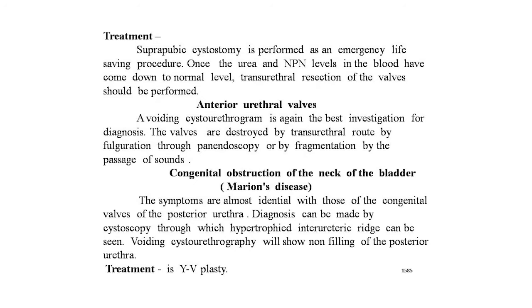Treatment: suprapubic cystostomy is performed as an emergency life-saving procedure. Once urea and creatinine levels in the blood have come down to normal, transurethral resection of the valve should be performed.